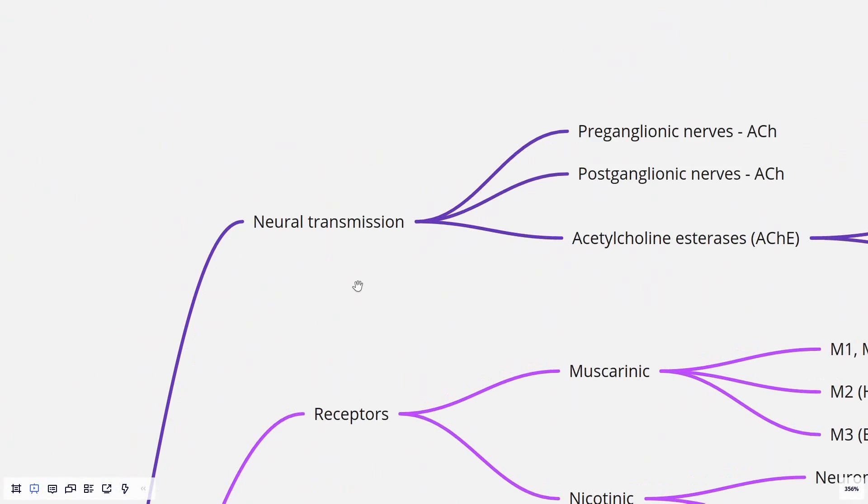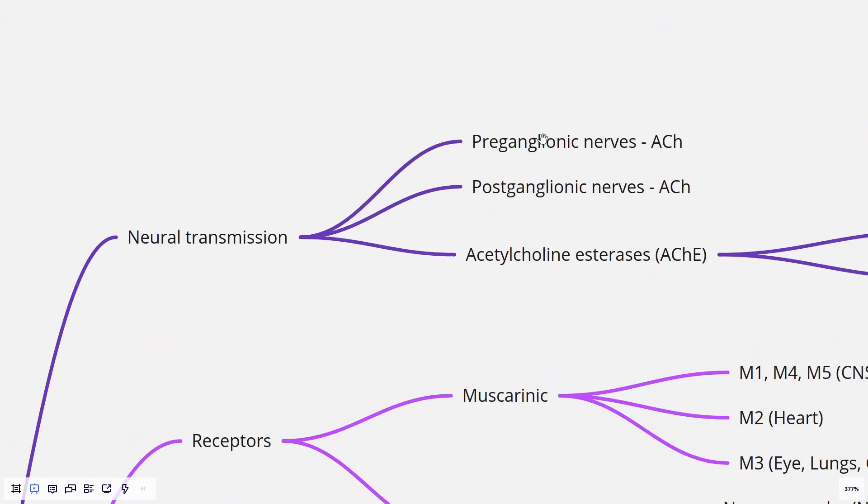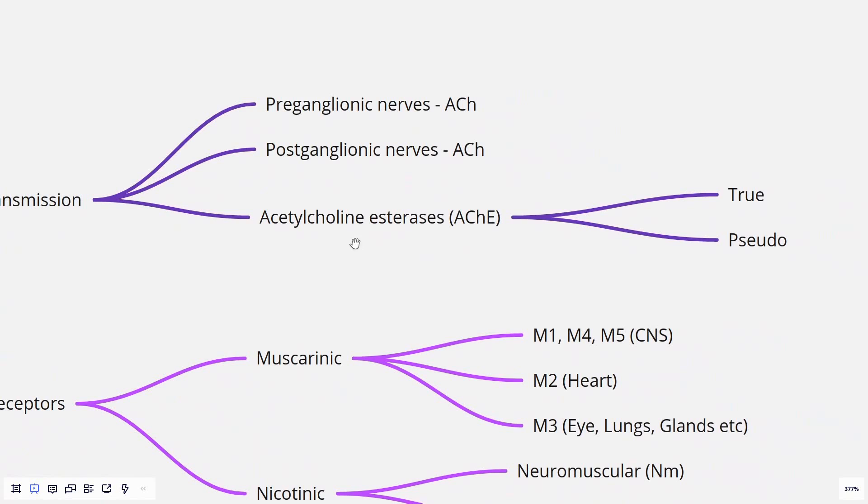First, the neural transmission. The preganglionic nerve fibers of the cholinergic system secrete acetylcholine. The postganglionic nerves also secrete acetylcholine. An important point to remember is about acetylcholinesterases. These are enzymes present in the synaptic cleft which cleave acetylcholine back into acetyl-CoA and choline. There are two types: true and pseudo. True acetylcholinesterases are present in the synaptic cleft, whereas pseudoacetylcholinesterases are the butyrylcholinesterases present in the plasma.